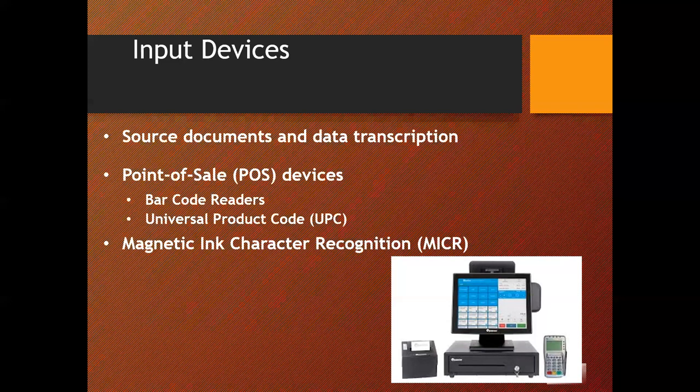Usually there are several ways of capturing accounting data, so system designers must pick those input procedures and devices that best meet the system's objectives. The starting point for collecting accounting data in most accounting information systems is a source document. Manual examples of source documents include time cards, packing slips, patient intake forms, and purchase invoices.